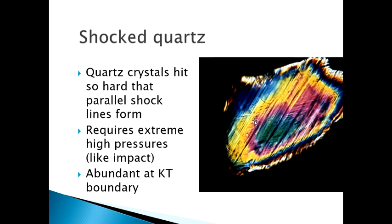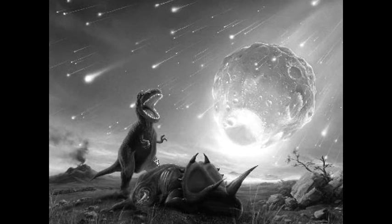A final bit of evidence comes from shocked quartz. You're looking at a picture of a single sand grain under a microscope — the whole thing might be a millimeter across. Normally you'd just see the pretty colors, but there are prominent parallel lines going in multiple directions — shock lines. Quartz is such a hard mineral that the only way to create those shock lines in sand grains is from extreme high pressures, like what would happen at an asteroid impact. And once again, we find these shocked quartz grains abundant at the KT boundary.